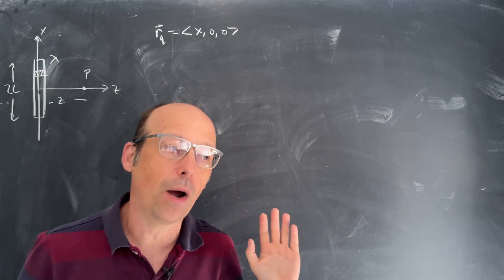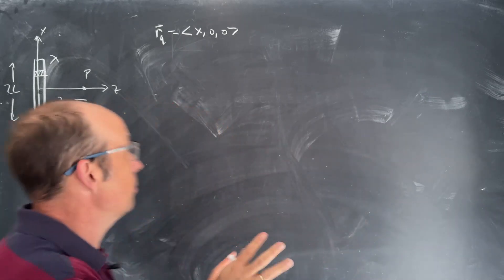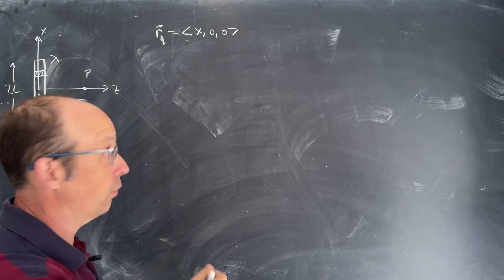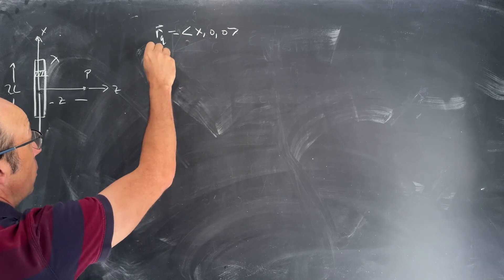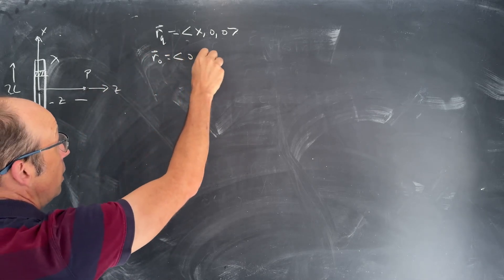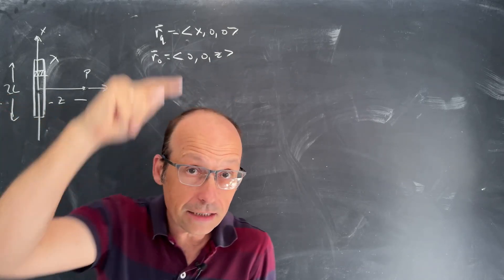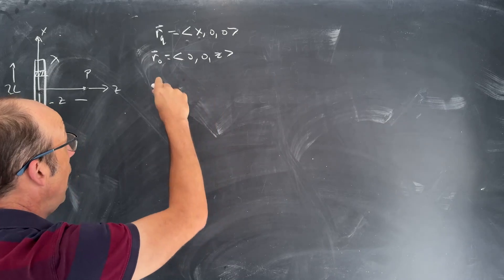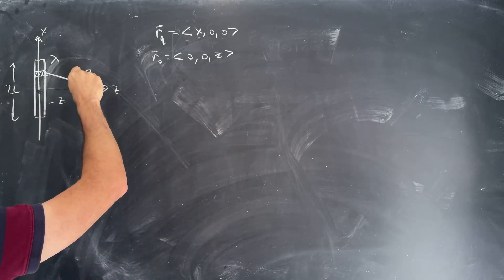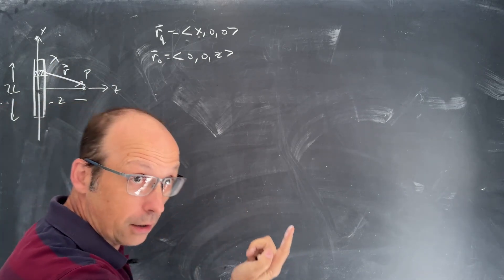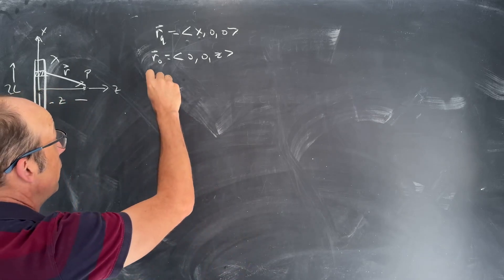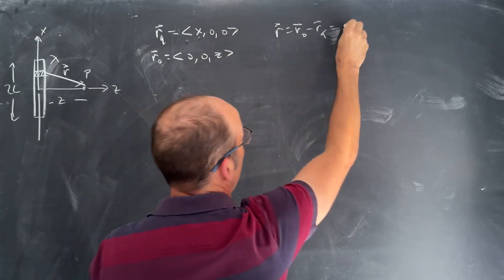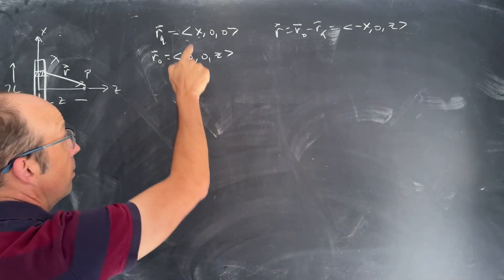I have my x-axis oriented this way for board space management. If this is my x-axis, then whatever the x value of that charge is, that's the vector location. The observation location ro is on the z-axis, so I can write that as zero, zero, z. That won't change as I move along the rod. Now I can find the vector r: r equals ro minus rq, which gives negative x, zero, z.